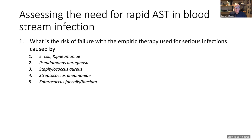When assessing the need for introducing rapid AST in bloodstream infections, you need to evaluate the risk of failure with the empiric therapy currently popular in your hospital for serious infections with E. coli, Klebsiella pneumoniae, Pseudomonas aeruginosa, Staphylococcus aureus, Streptococcus pneumoniae, Enterococcus faecalis, and E. faecium. You don't need to worry as much about Proteus mirabilis or Enterobacter cloacae. The species listed normally comprise 80–85% of organisms found in positive blood cultures.